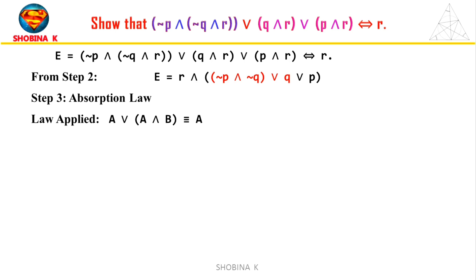In this step, we apply the absorption law to simplify the disjunction. This law states that A or (A and B) is equivalent to A, which means if A is true, the whole expression is true, no matter what B is. If A is false, then A and B is also false. So the whole expression is false. Thus, the expression just simplifies to A.